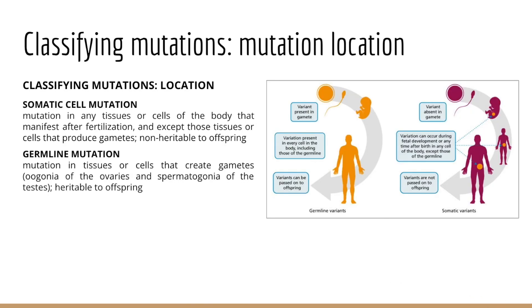In addition to classifying mutations by molecular change — substitution or frame shift — we can also group mutations based on the location of the mutation. In eukaryotes we have two primary cell types to consider: somatic cells and germline cells. A mutation in a somatic cell versus a mutation in a germline cell — mutations can occur in either type. Somatic mutations are mutations that happen in any cell of the body except germline cells. Germline mutations only occur in germ cells — the cells of the gonads that create our gametes: oogonia in females and spermatogonia in males.